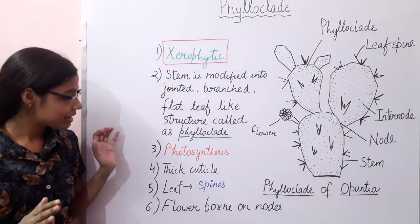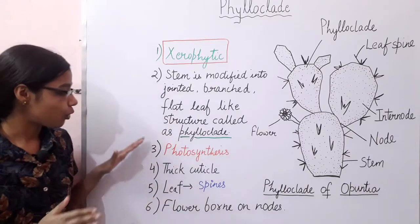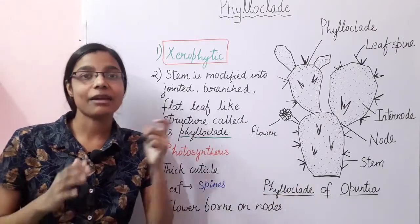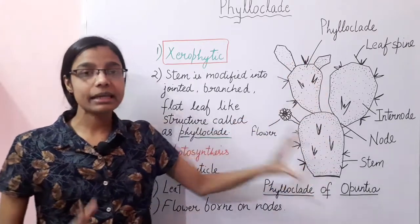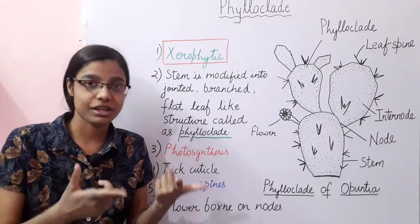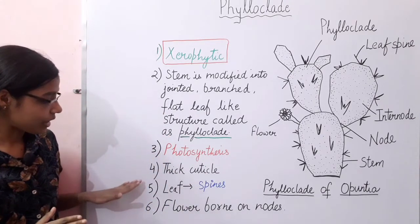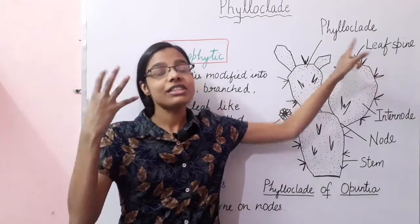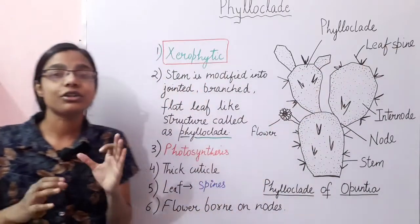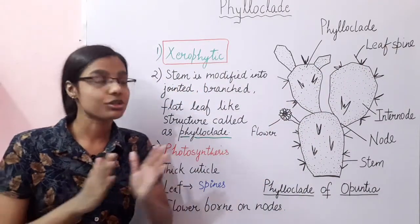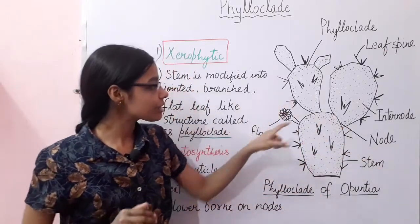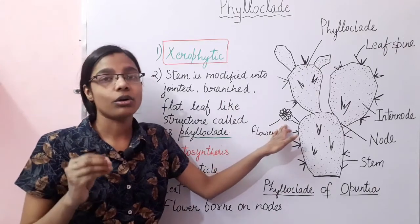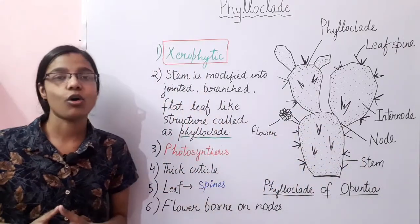This phylloclade is green in color so it performs photosynthesis. As Opuntia grows within a xeric environment, it has a thick layer of cuticle over it which reduces transpiration. The original leaves get modified into the form of spines to further reduce transpiration. Flowers are born on the nodes, as the phylloclade consists of nodes and internodes — the joint portion is the node and the rest is the internode.